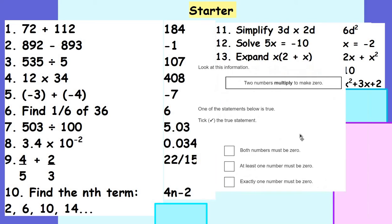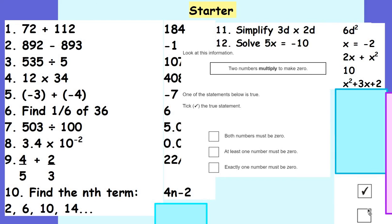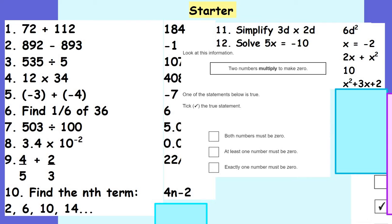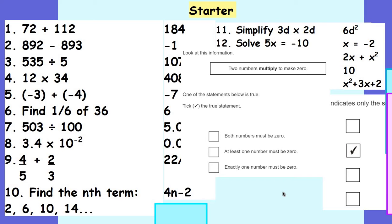If you had a go at the extension question: two numbers multiply to make 0, and one of the statements below is true. The second one has to be true — at least one number must be 0 for them to multiply and make 0.